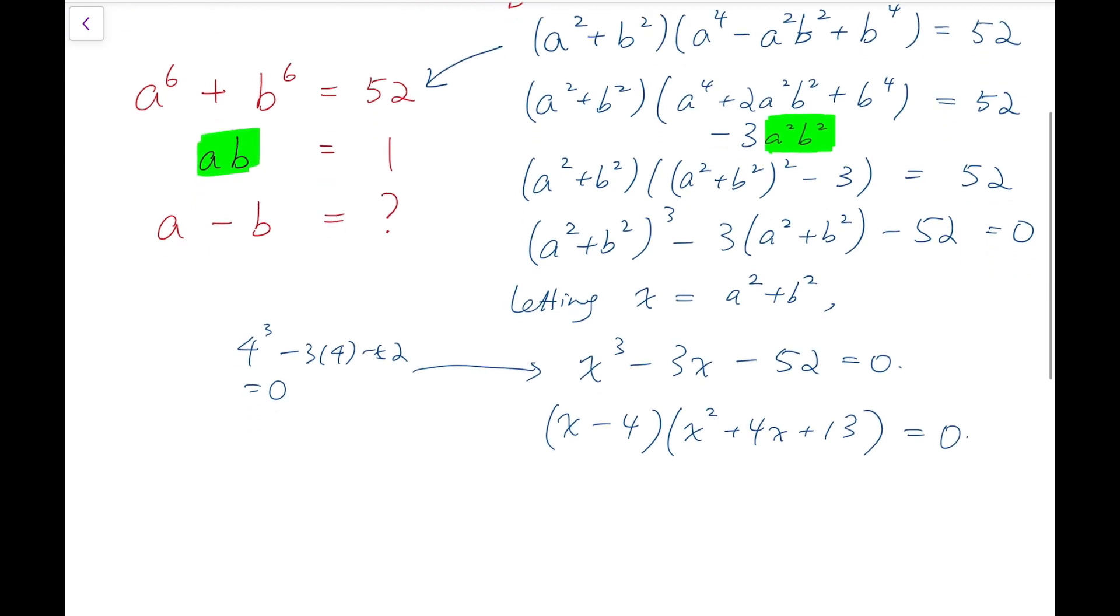So either we have x = 4, or (x + 2)² + 9 = 0. And we know that for this part, there is no solution. So that means A² + B² = 4.